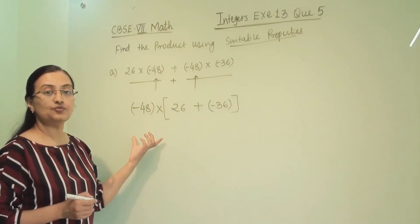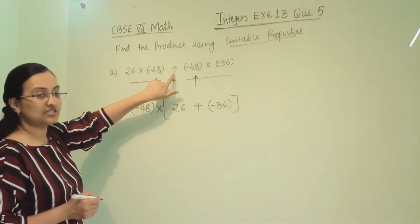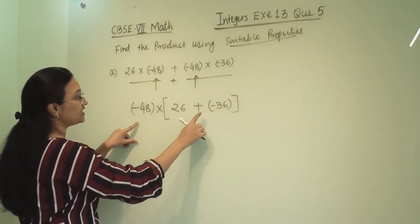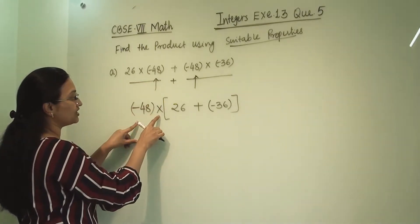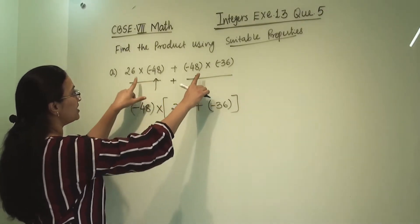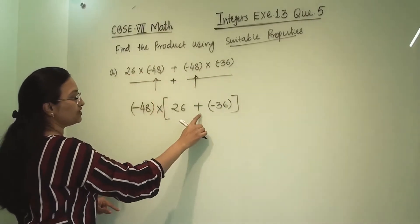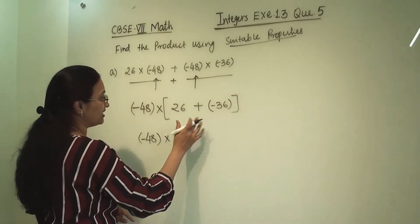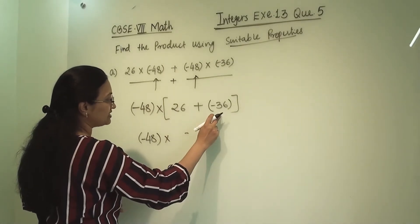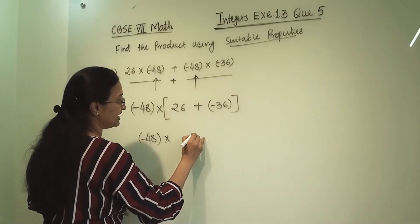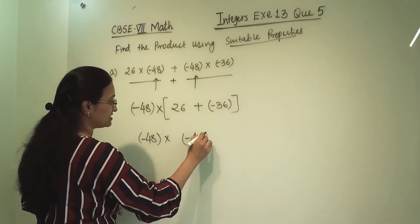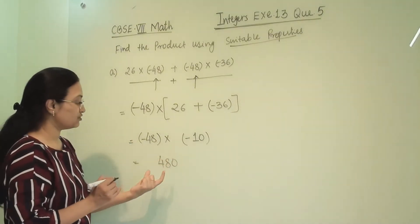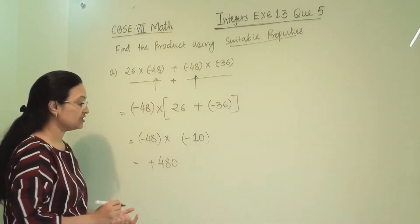This is the distributive property of multiplication over addition, because here addition is present. We have taken out -48 as common, so these two terms are in multiplication with -48, and the two remaining terms are in addition with each other. Solving the bracket: 26 - 36 gives -10. So -48 × (-10) = 480, and since both integers are negative, the answer is positive: +480.